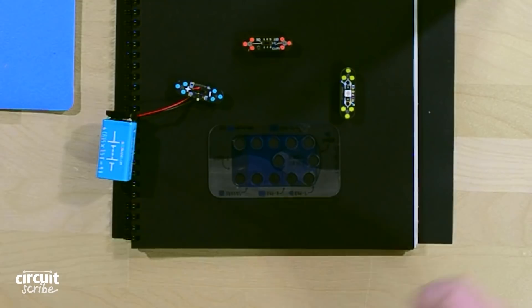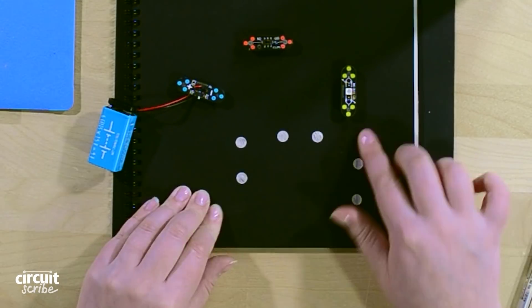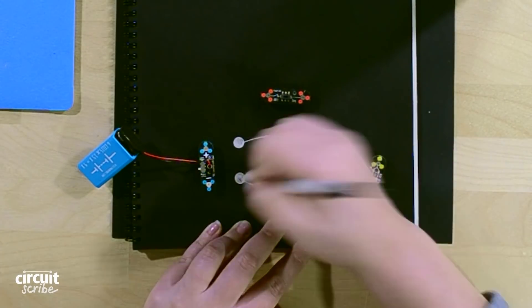Let's make a simple circuit using a battery, switch, and LED, and we'll use the switch to turn the LED on and off.